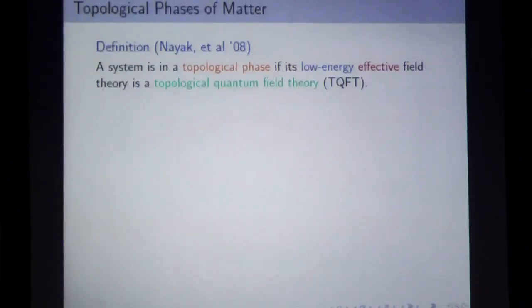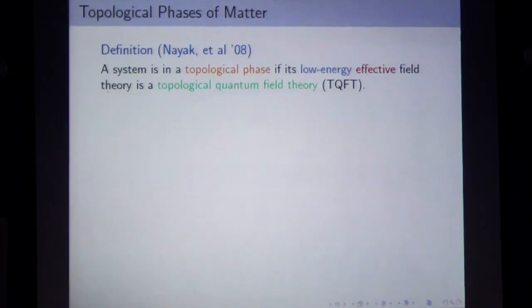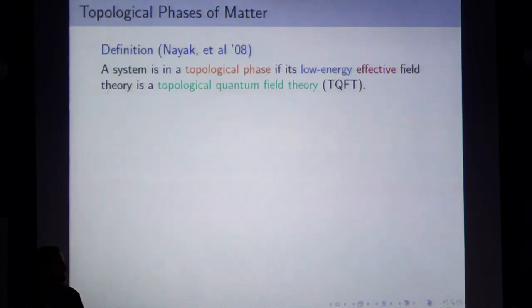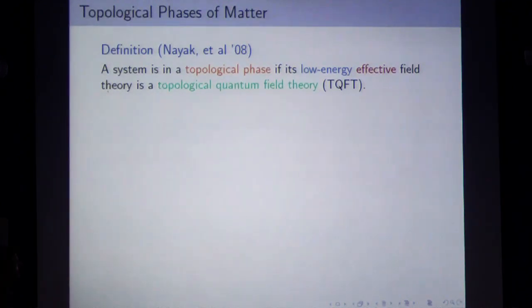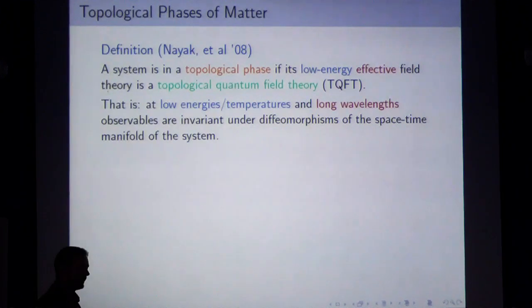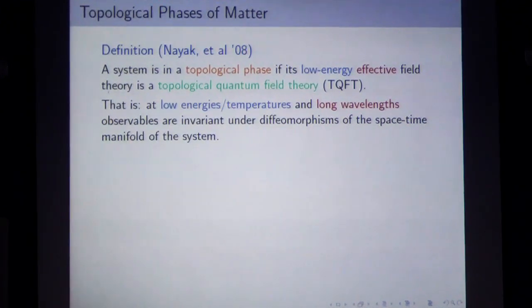Let me say a little bit about topological phases of matter. Here's a definition by some physicists: a system is in a topological phase if its low energy effective field theory is a topological quantum field theory. The words 'low energy' and 'effective' essentially correspond to very low temperatures, so there's no issue with thermal fluctuations. Everything classical is suppressed, so it's very quantum.